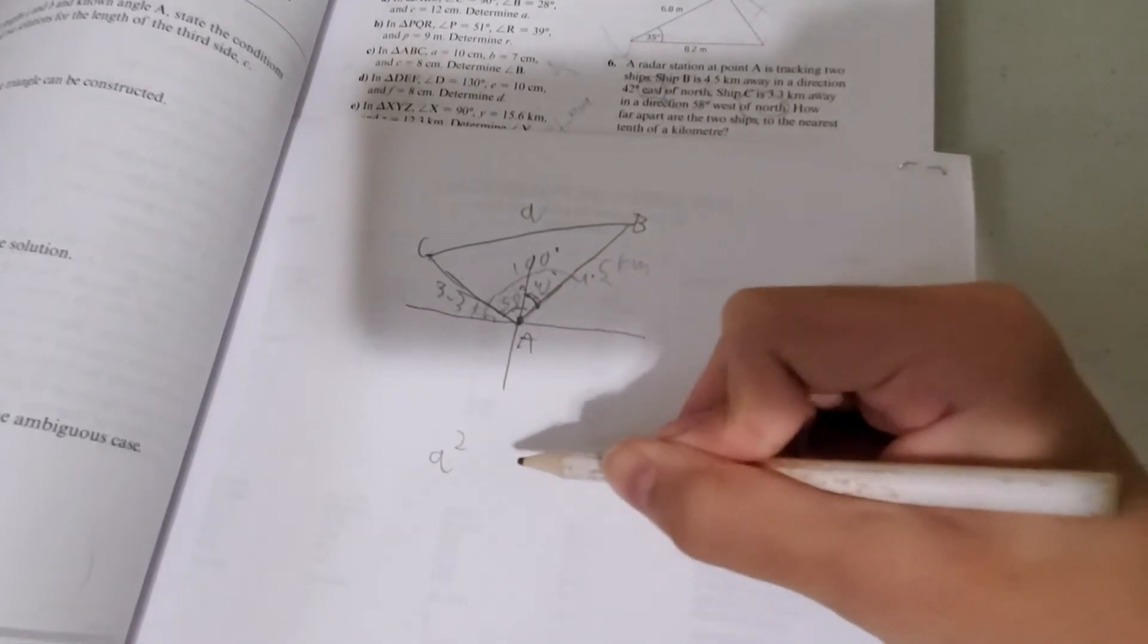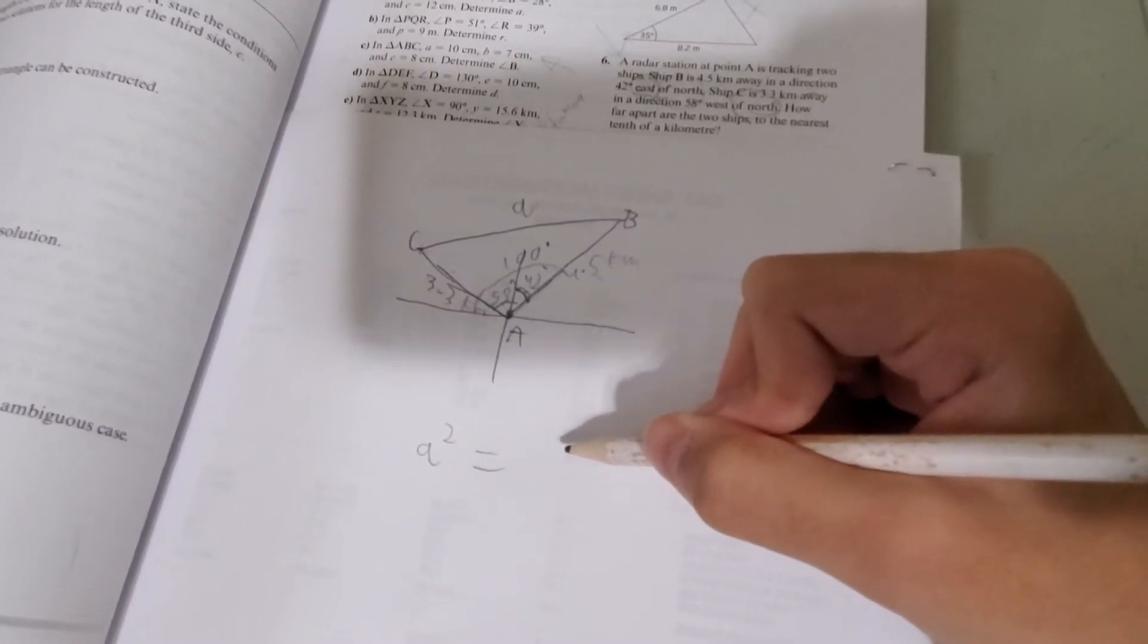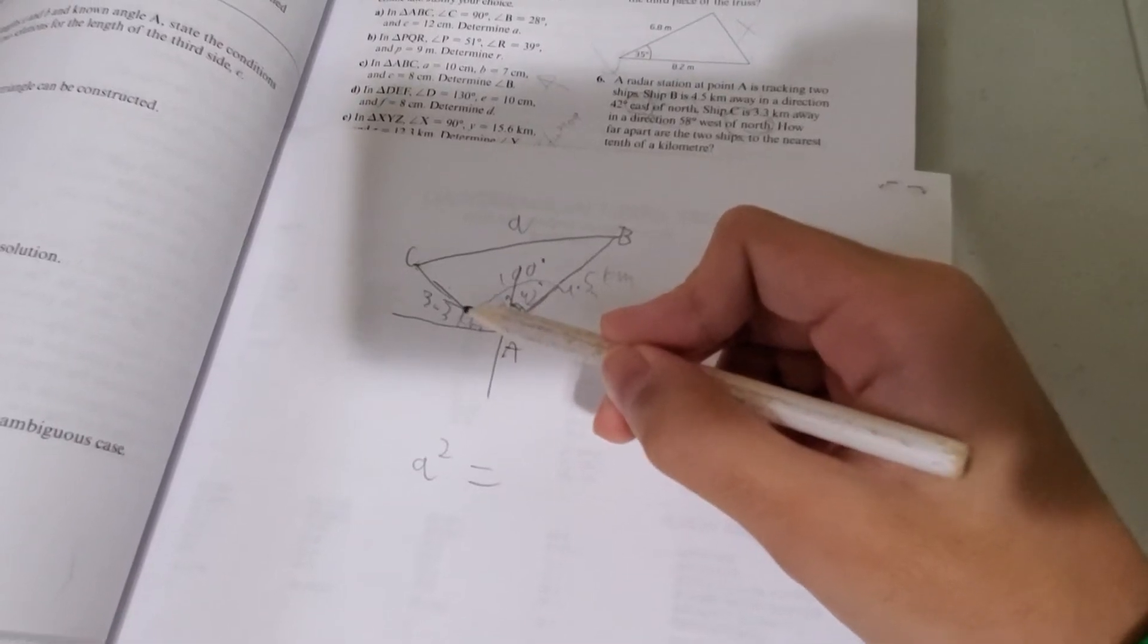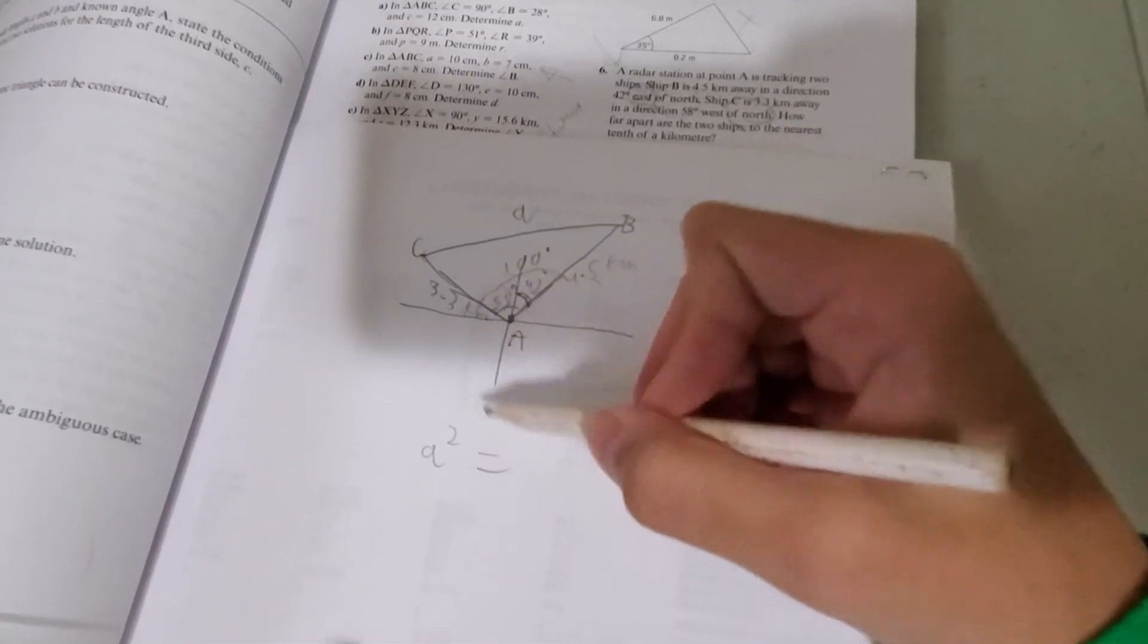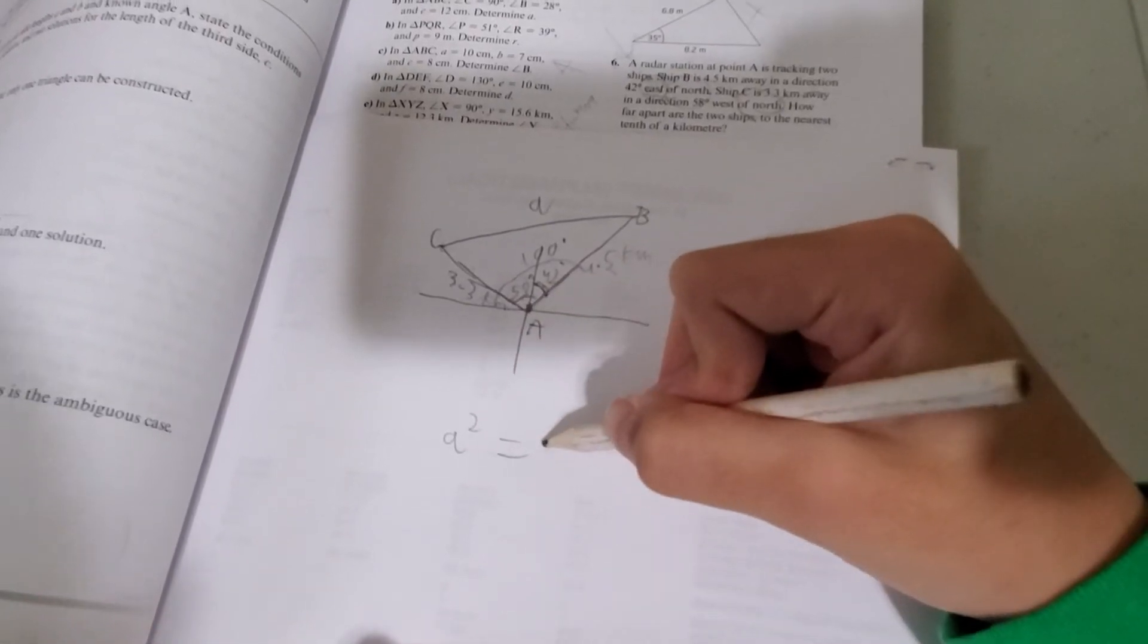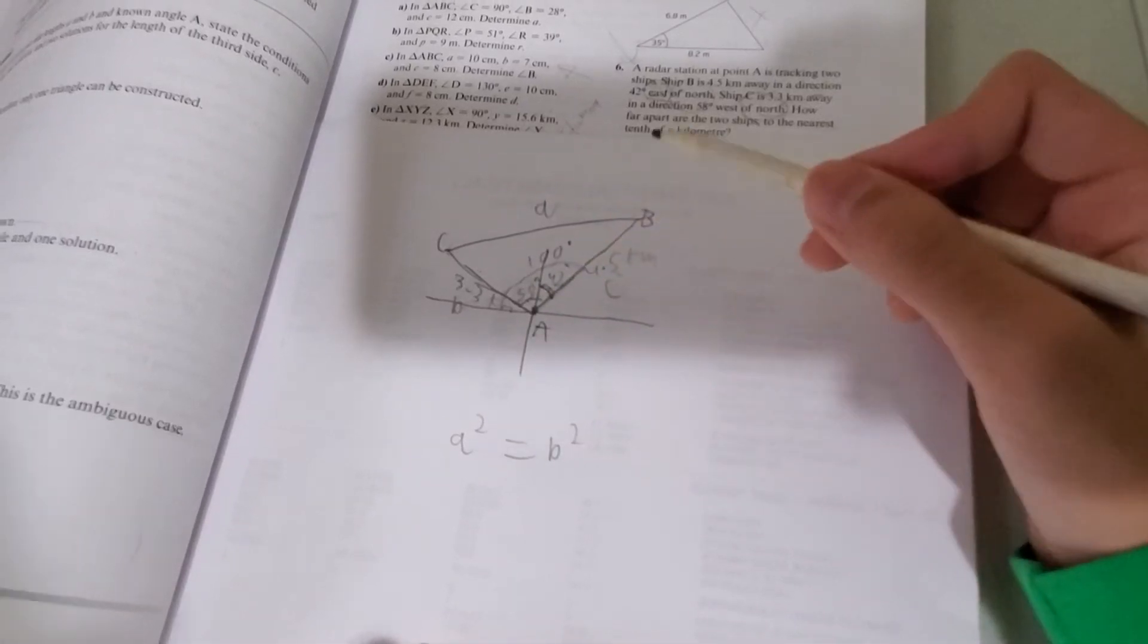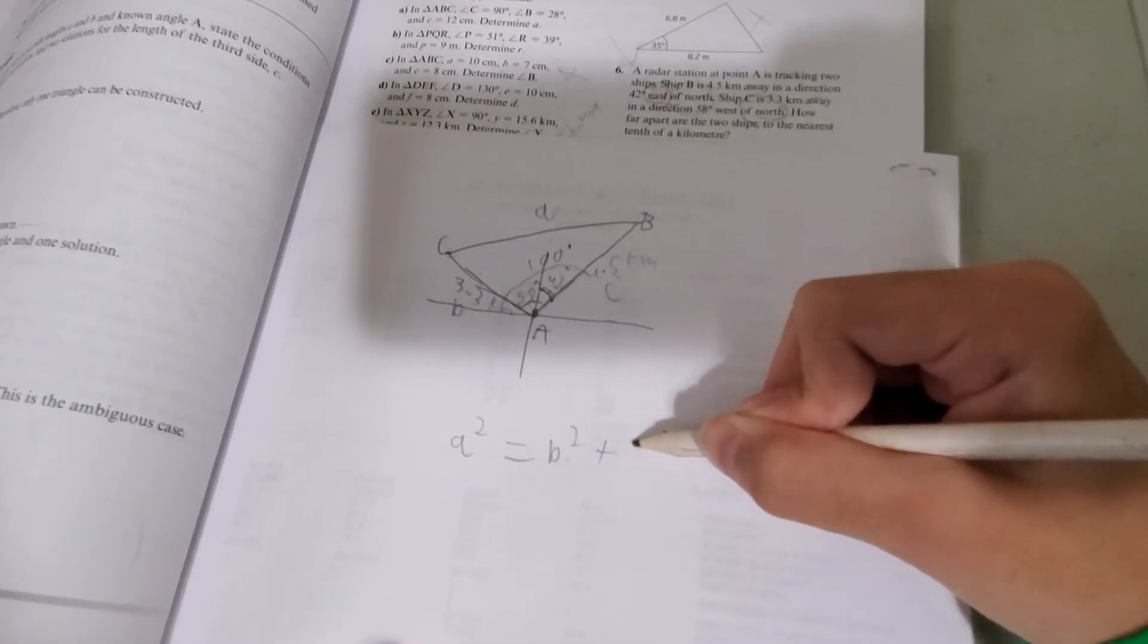So this is the rule. A squared equals to the adjacent side to the angle squared, which is B squared. Which is B squared. Let's just call this length B and C, because B and C are adjacent to the given angle. So B squared, C squared. C squared. So this adjacent side squared plus this adjacent side squared.